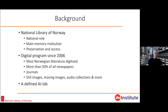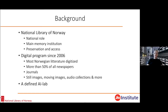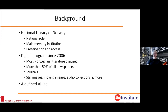The background for what we are doing is that back in 2006 we started off with a digitization program. As the main memory institution in Norway, as the national library, we have more or less whatever has been published in Norway on all media — books, newspapers, radio, television, moving images, still images, et cetera. We also do harvesting of the Internet. So far, we have digitized more or less all the books ever published in Norway, more than 50% of all the newspapers. We have journals, still images, moving images, audio collections and more. And this is the perfect arena to do AI. We also have this AI lab.